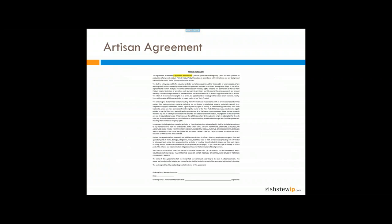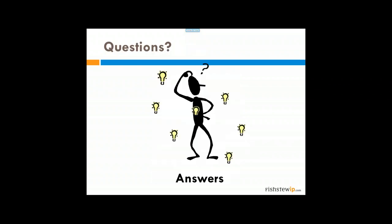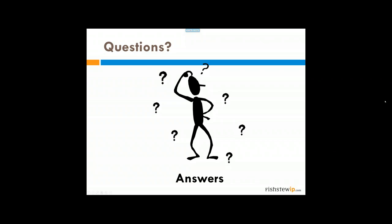I mentioned at the beginning a one-page artisan agreement I put together. If you send me an email, I'll send it to you in Word format. It's basically designed to help protect you from your customers if they're giving you something that causes you concern, and it also covers your subcontractors. Think about using it when appropriate.